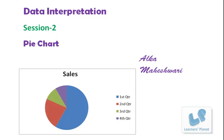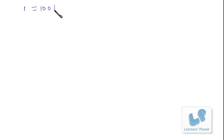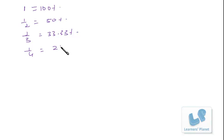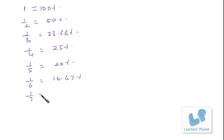Let's have a quick revision of percentage-to-fraction and fraction-to-percentage conversion so you can refresh it. When the numerator is 1, with various denominators: 1/1 is 100%, 1/2 is 50%, 1/3 is 33.33%, 1/4 is 25%, 1/5 is 20%, 1/6 is 16.67%, and 1/7 is around 14%.